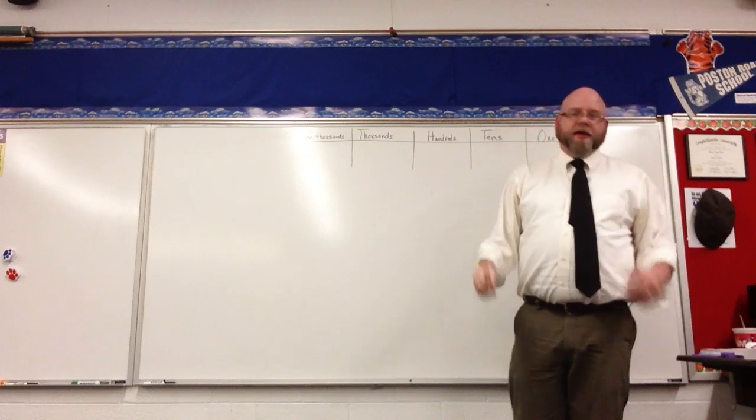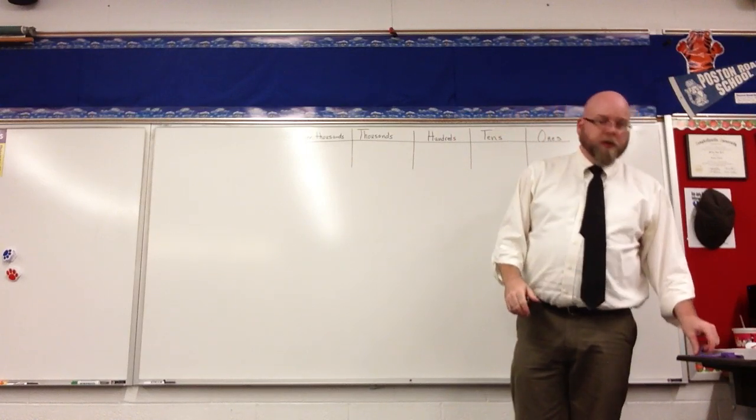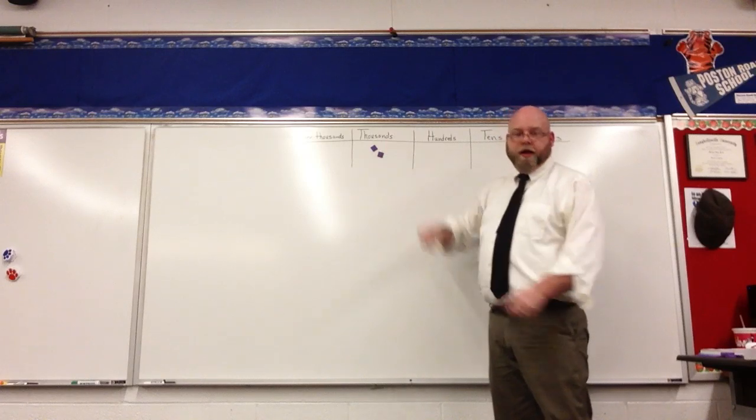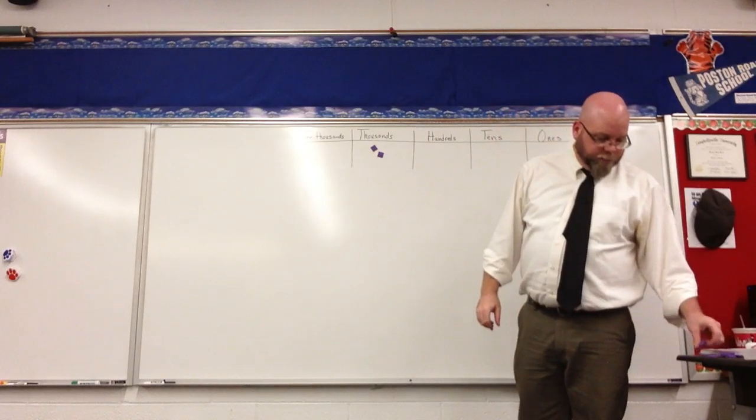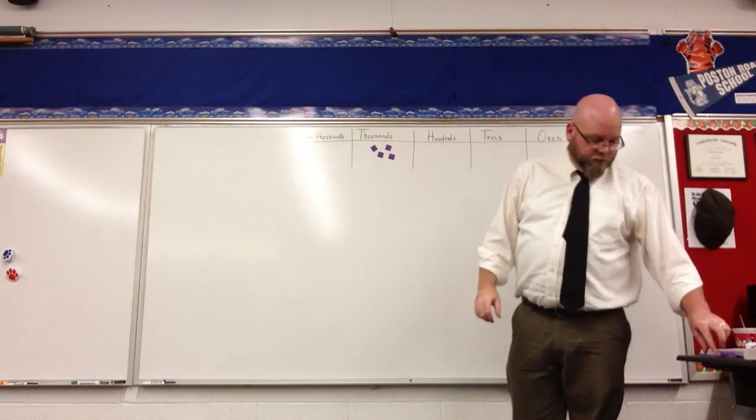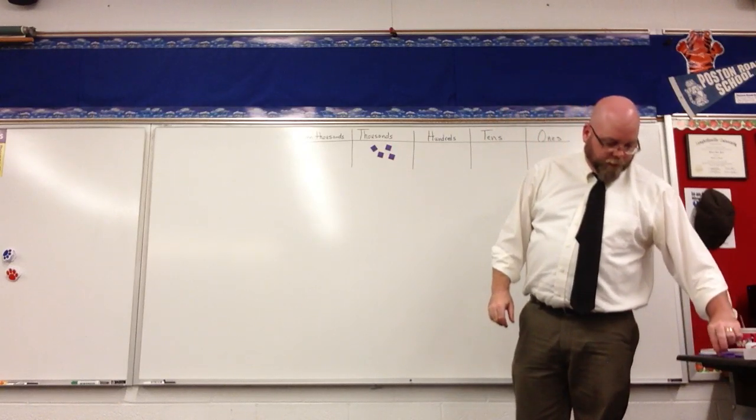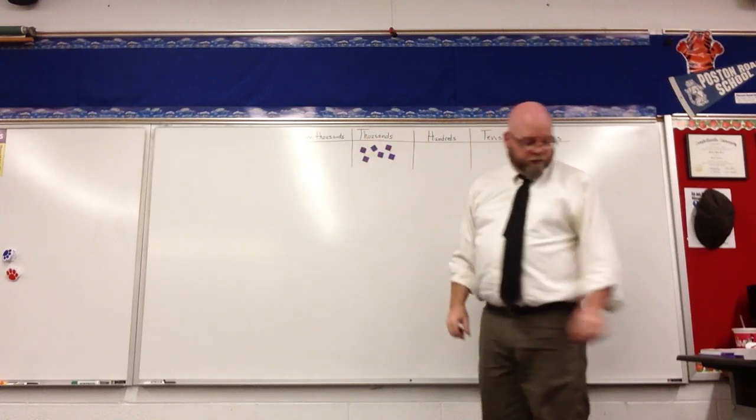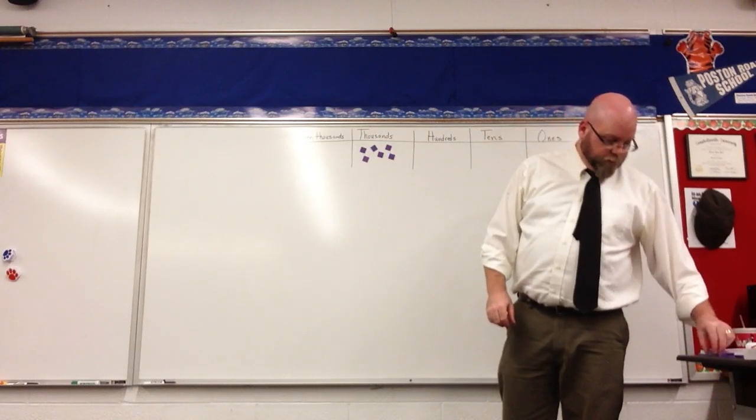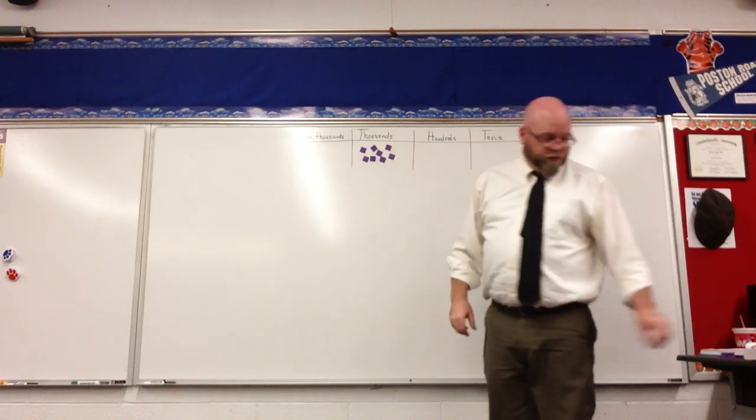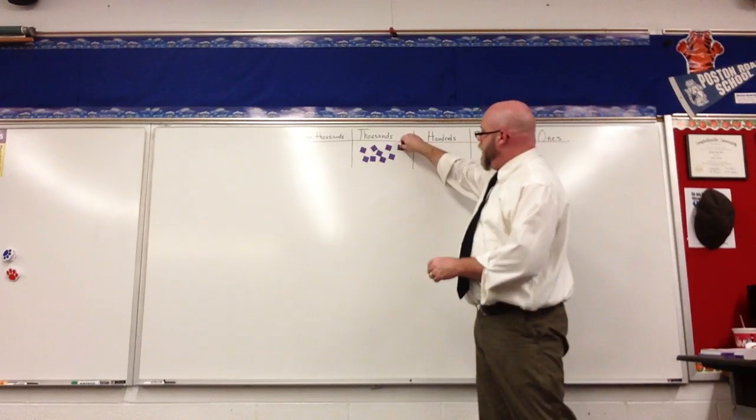So if we're counting by a thousand, we could be counting one thousand, two thousands, three thousands, four thousands, five thousands, six thousands, seven thousands, eight thousands, nine thousands.